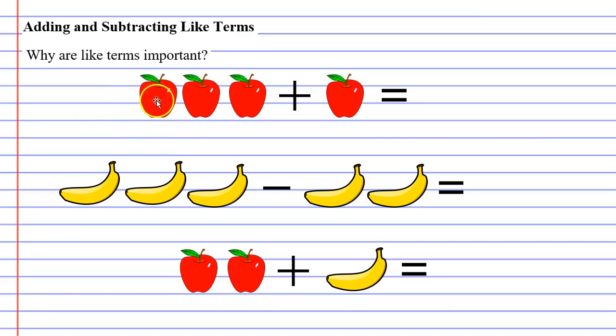We've got three apples plus another apple. What do we get when we do that? Well, we're going to get four apples, aren't we? This can also be expressed algebraically. What I can do is say, well, I've got three apples. I'm going to represent apples as the pronumeral a, and I'm going to write 3a to say I've got three apples.